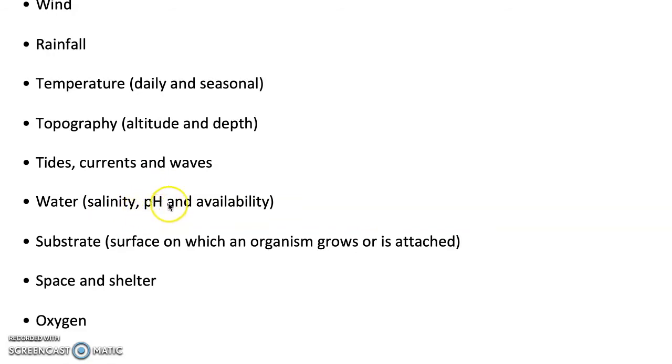pH is about the acidity or basicness of the soil. Certain plants and organisms have a range, so certain plants will like a slightly acidic soil. With all of these there's a range of what organisms like and don't like. Water availability becomes important too.